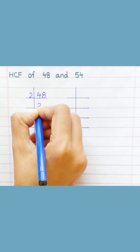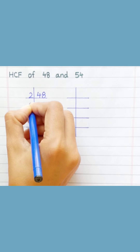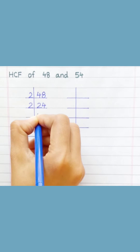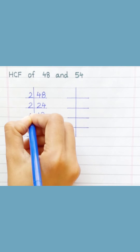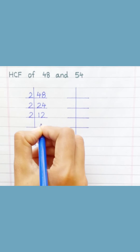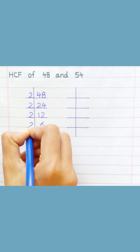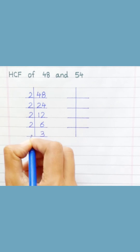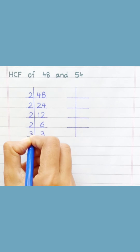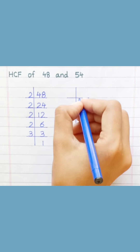Two twos are 4. Two fours are 8, two ones are 2, two twos are 4, two sixes are 12, two threes are 6. Three ones are 3. 54.